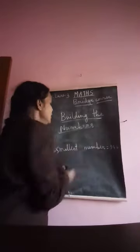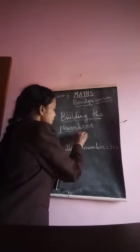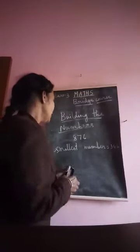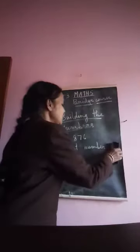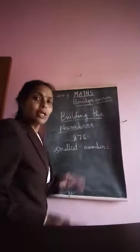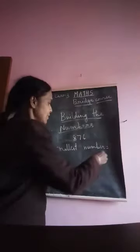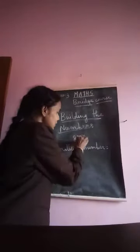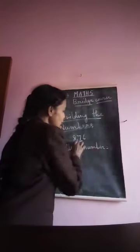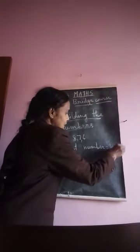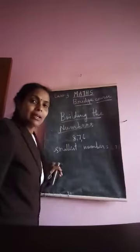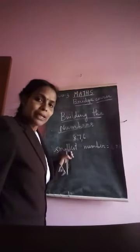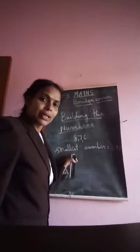Take another example: digits 8, 7, and 6. You have to make the smallest number. Since you are making the smallest number, you write the digits in increasing order. Write 6 first, then 7, then 8. So 678 is the smallest number we build using digits 8, 7, and 6.